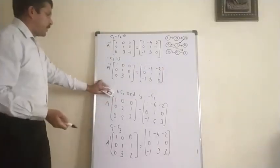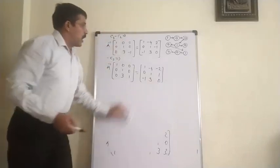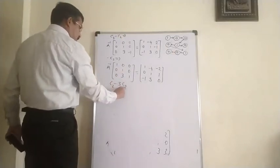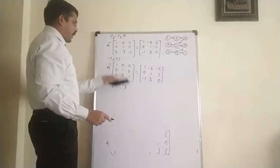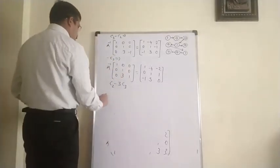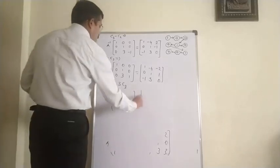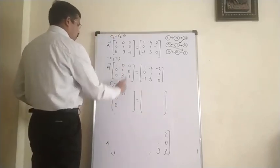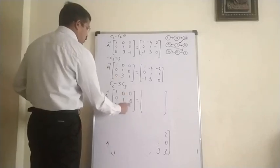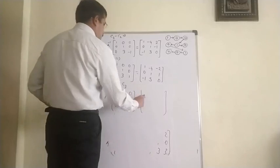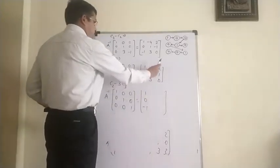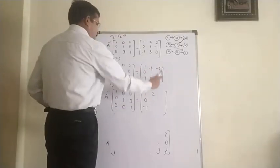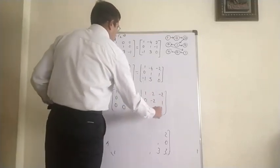We have multiplied the last column by negative sign. Now, after getting 1 in the third diagonal, we need to bring 0 in the third position of the second column. Using C2 minus 3·C3: first column no change; for C2 minus 3·C3: 0 minus 0 is 0, 1 minus 0 is 1, 3 minus 3 is 0; third column as is with 0, 0, 1. On the right side: 1, 0, minus 1 stays; minus 4 plus 6 becomes 2, 1 minus 3 becomes minus 2, 3 minus 0 becomes 3; and minus 2, 1, 0.